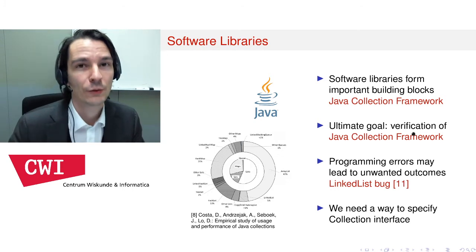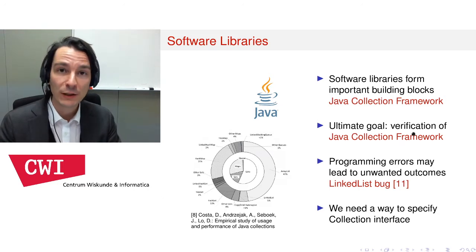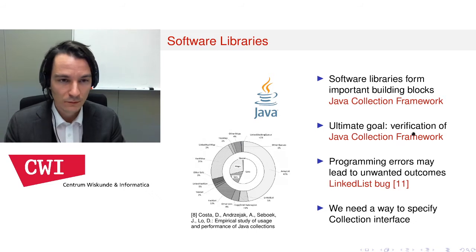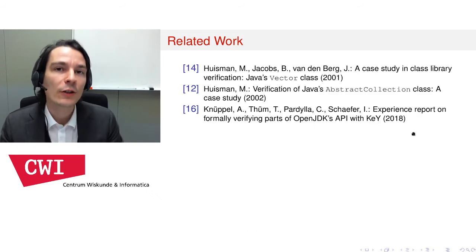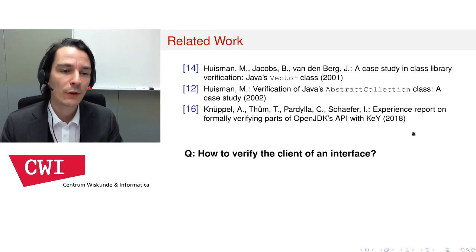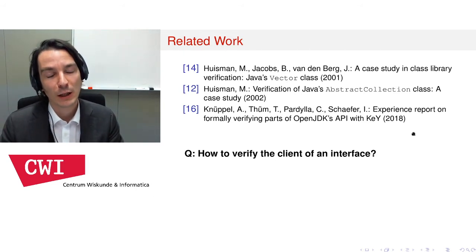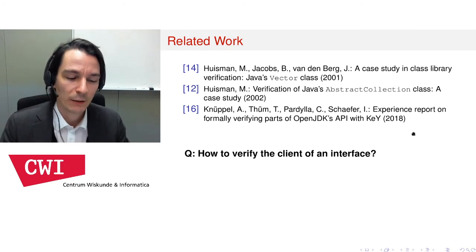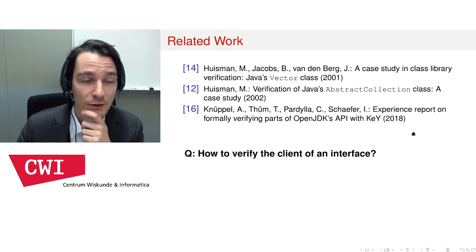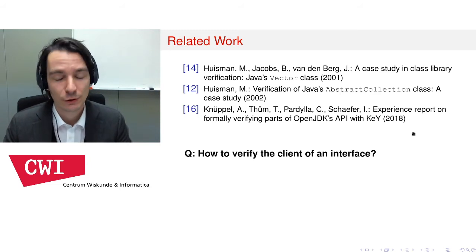Before we can continue the full verification of the Java collection framework, it is necessary to be able to specify — to give a specification of — the collection interface itself. There is some related work on the verification of Java collections and collection implementations, but the main question we have is: how do you actually verify a client of an interface? By client of an interface I mean a piece of program that makes use of an object that implements an interface. And since you do not know what implementation you are dealing with, how can you verify the usage of such an interface?